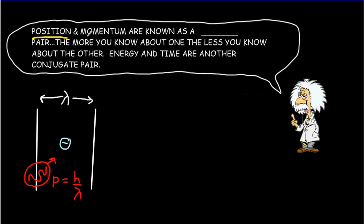Position and momentum are known as a conjugate pair — the more you know about one, the less you'll know about the other. Another conjugate pair is energy and time, and we'll talk more about that in a second.